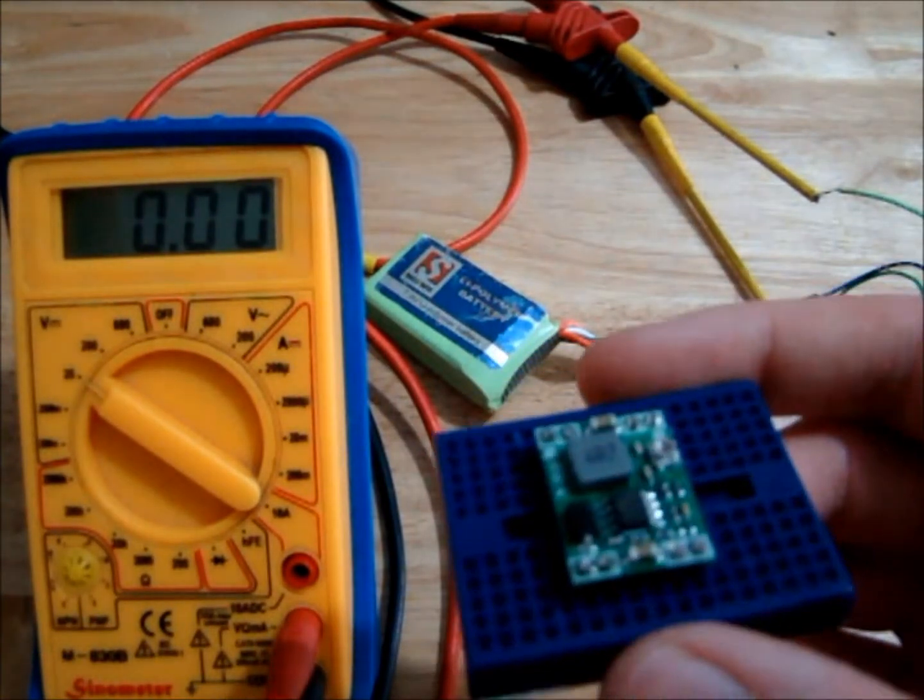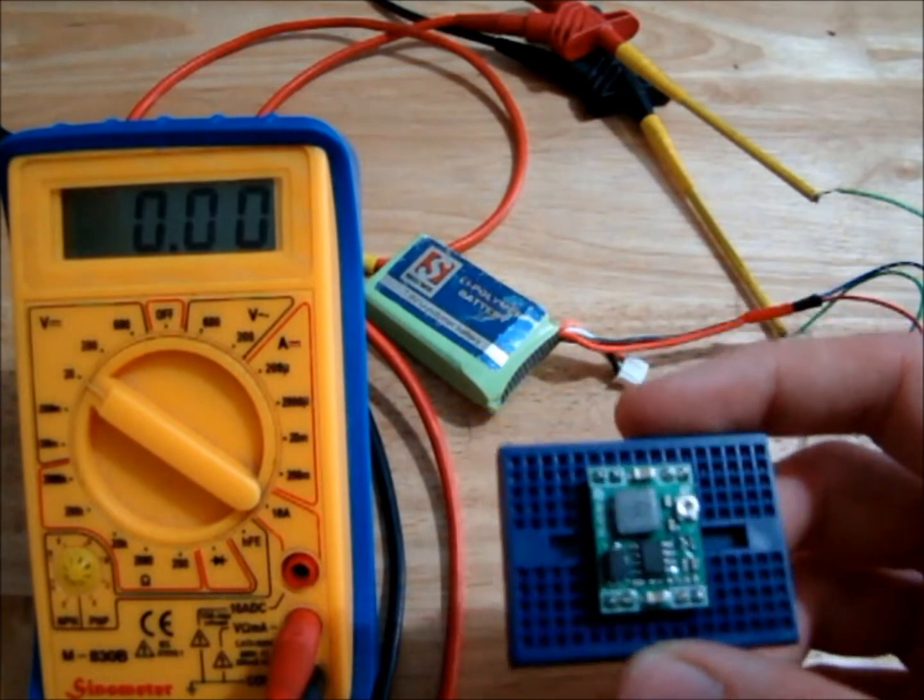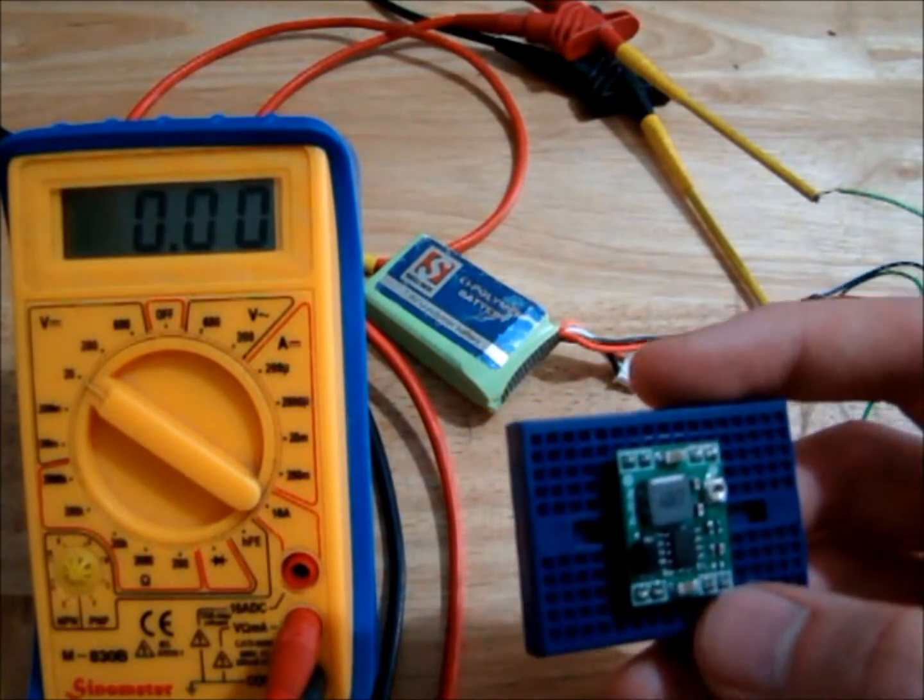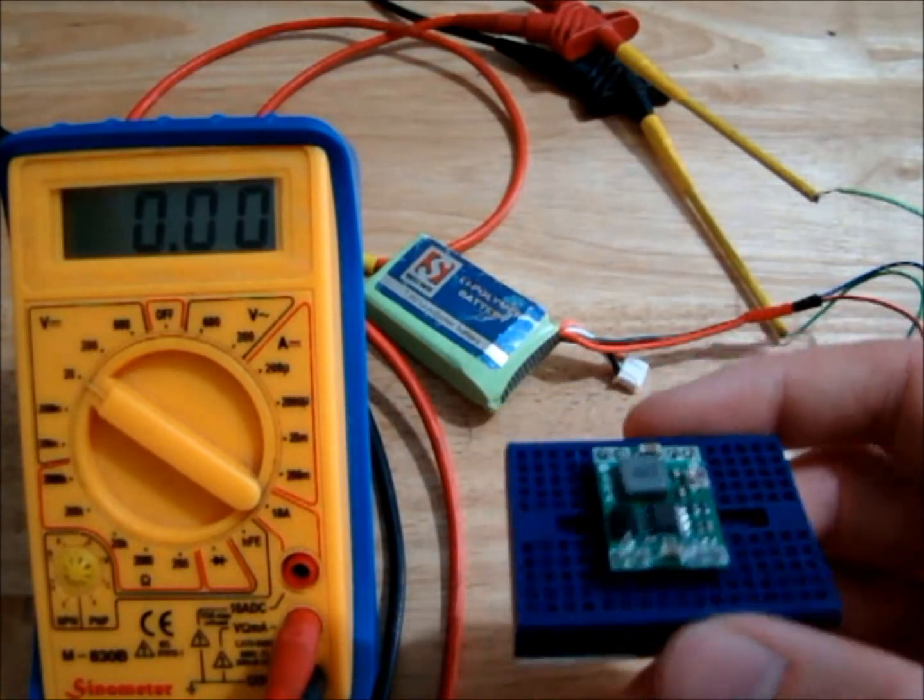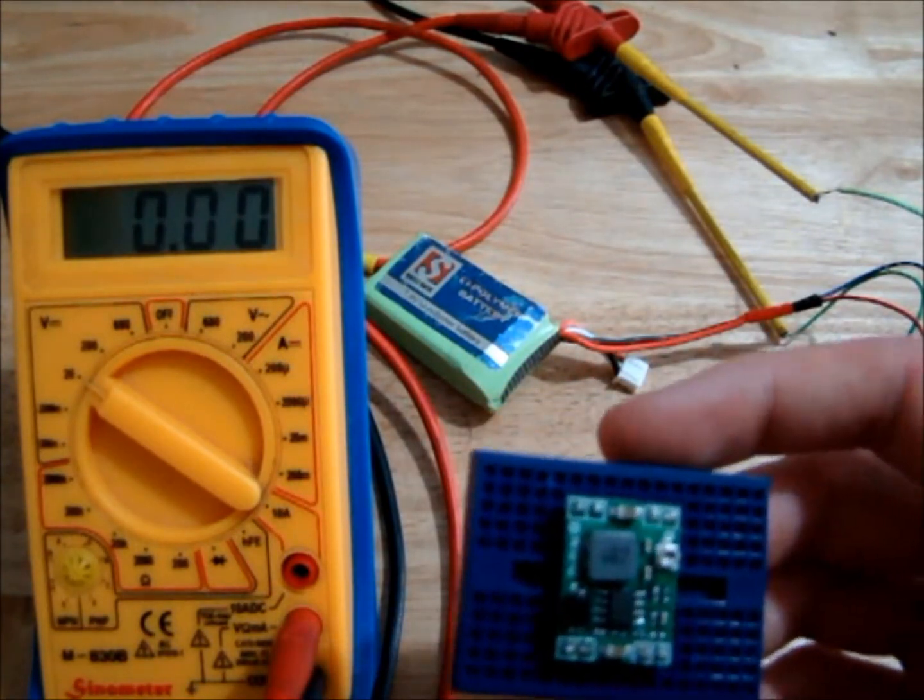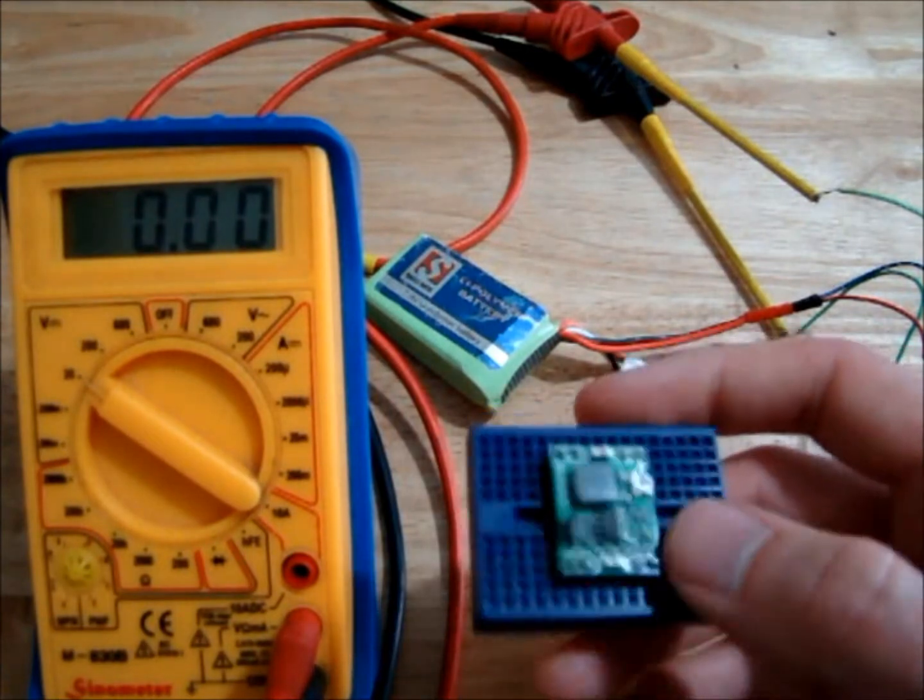And it should be able to convert that to an output voltage between 0.8 and 20 volts with a 96 percent efficiency. But I presume that 96 percent efficiency is only at one particular voltage, probably its best, whatever that is.